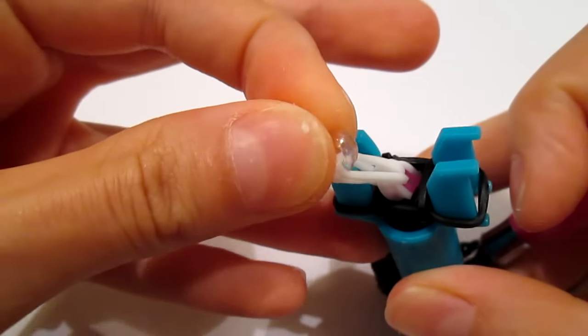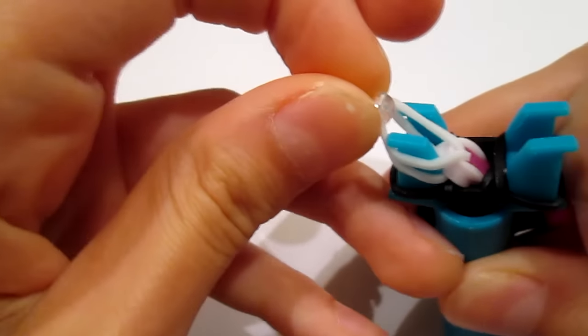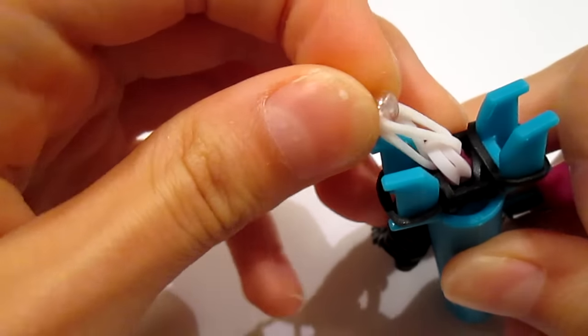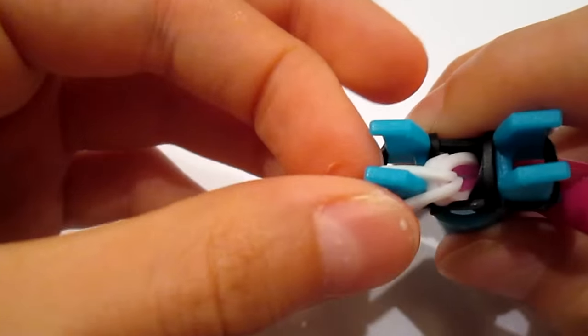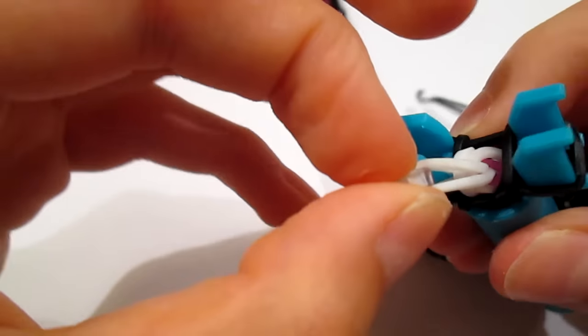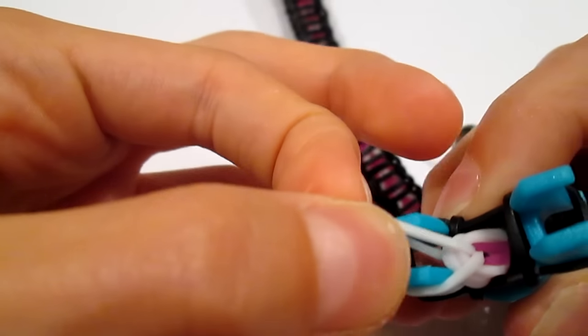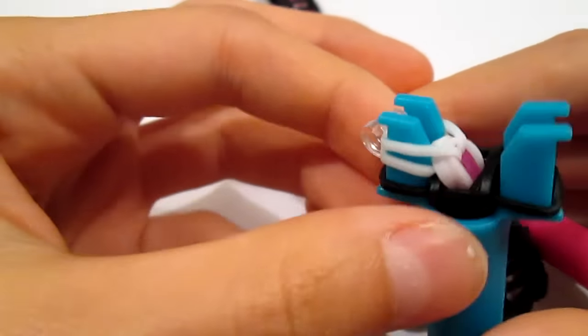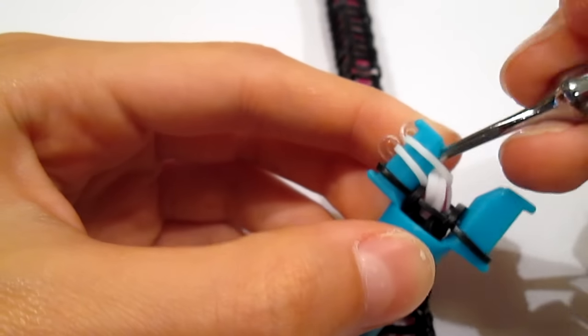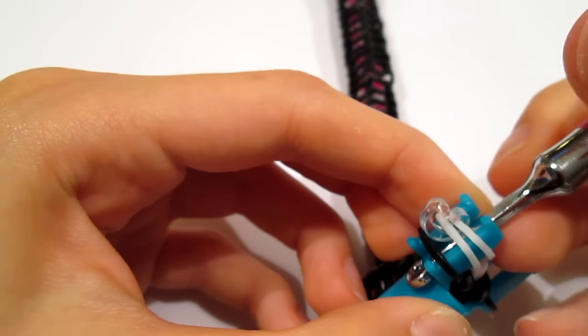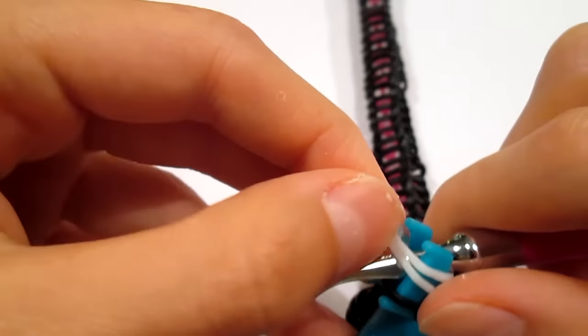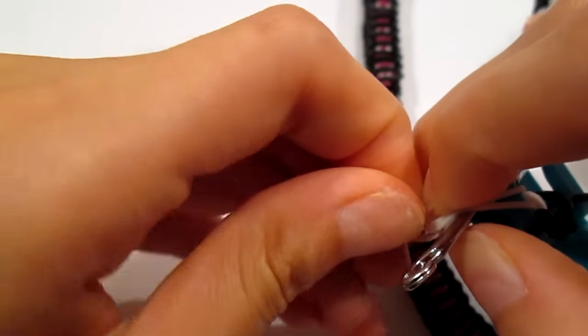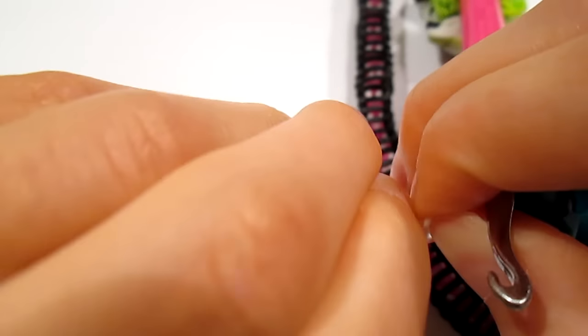You might want to stretch this out a bit and put it onto a peg. Both of the parts of the fishtail. Like that. And then, I'd like to take your C clip off for now and set it to the side.